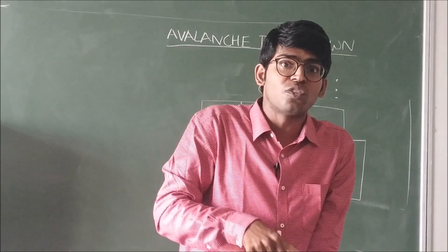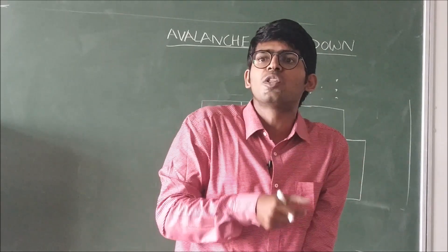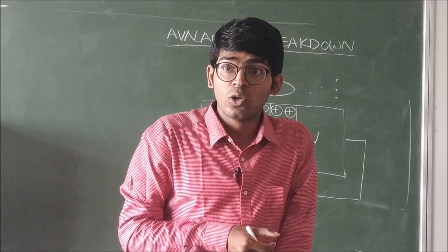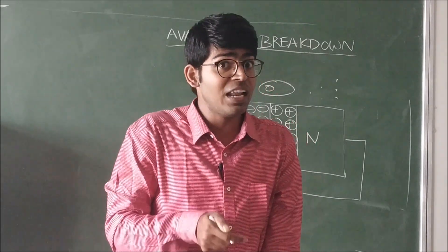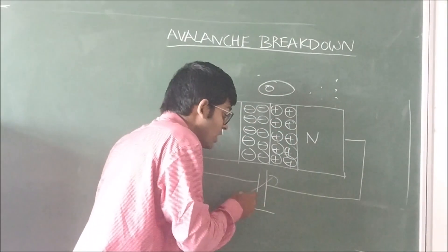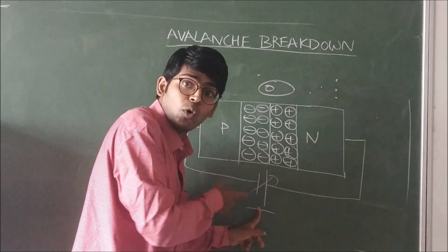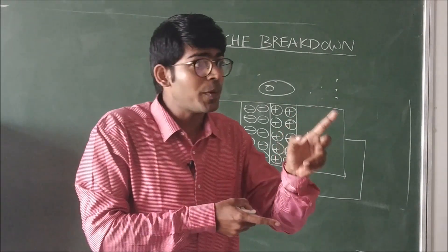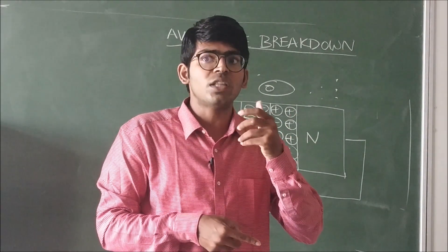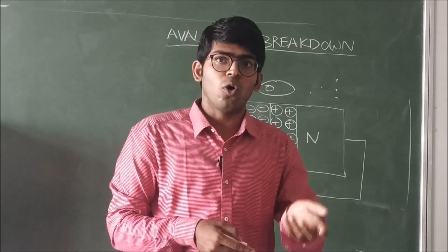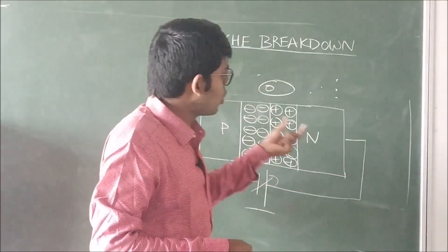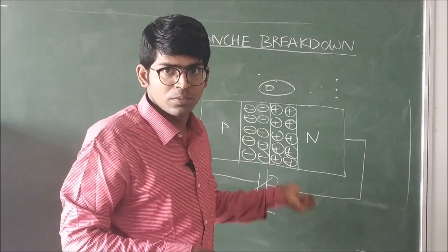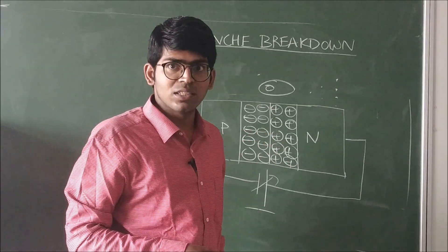Because of this chain process, a huge current is observed. This breakdown is called avalanche breakdown. In summary, for avalanche breakdown to occur, the applied voltage must be high, and the diode used is a lightly doped diode. This is the avalanche breakdown.